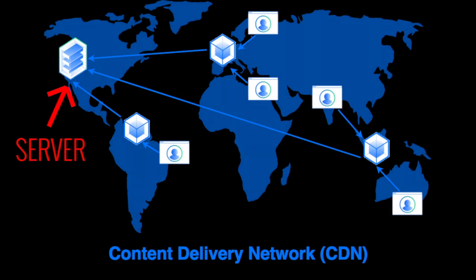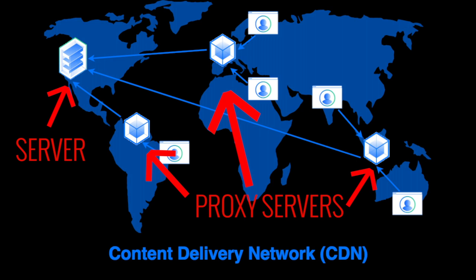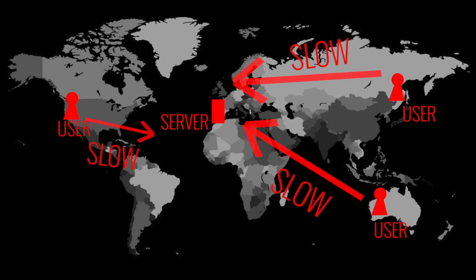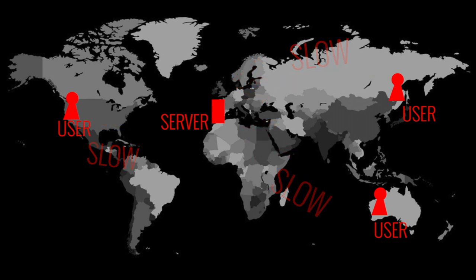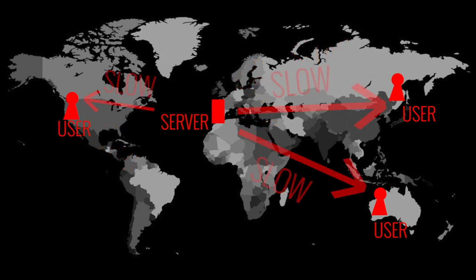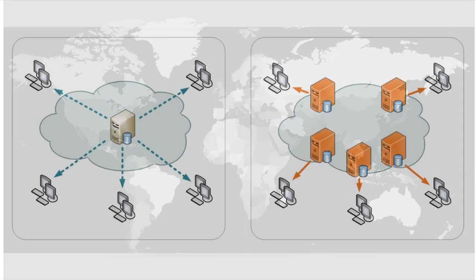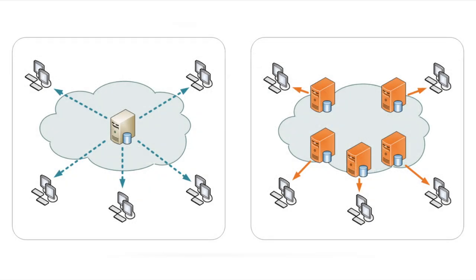CDNs are geographically distributed networks of proxy servers serving content to users more quickly. If all server requests are sent to the same place, it takes a lot of time and effort for that request to be sent back to the user because there are potentially thousands of users at once from all over the world. CDNs act as a layer between the user and the server to avoid sending all of these requests to the same server.